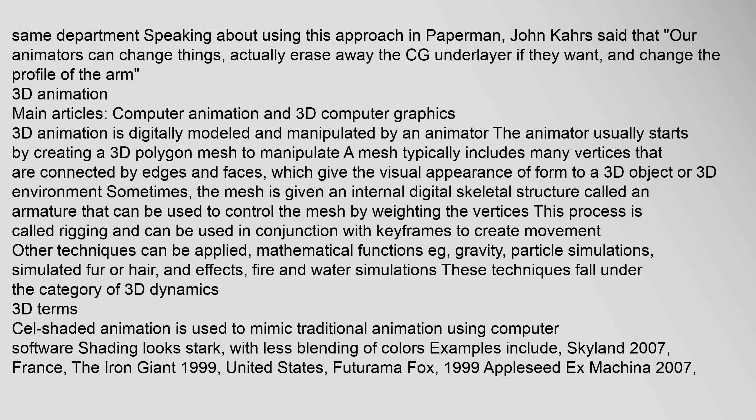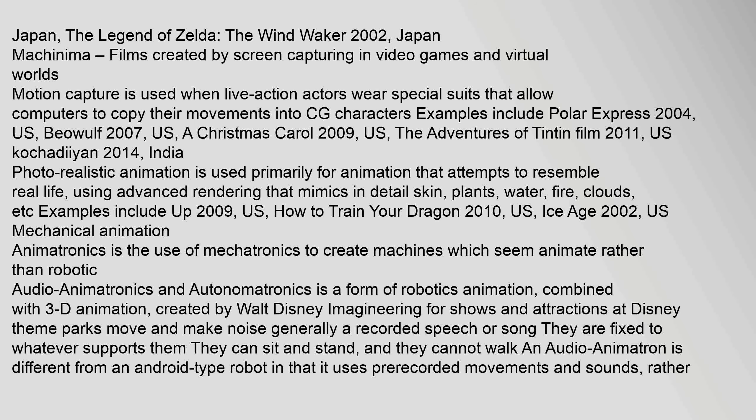Cell-shaded animation is used to mimic traditional animation using computer software; shading looks stark with less blending of colors. Examples include Skyland (2007), The Iron Giant (1999), Futurama (Fox, 1999), and Appleseed Ex Machina (2007). Machinima refers to films created by screen capturing in video games and virtual worlds. Motion capture is used when live-action actors wear special suits that allow computers to copy their movements into CG characters, with examples including Polar Express (2004), Beowulf (2007), A Christmas Carol (2009), and The Adventures of Tintin (2011).